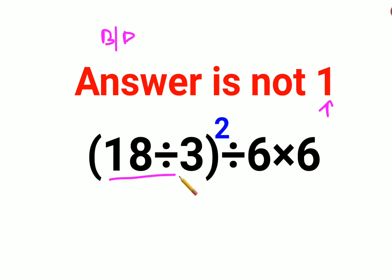So we have 18 divided by 3, that is 6 squared, divided by 6 into 6. Now this is where a lot of people get stuck. They think we should do this: 36, and this becomes divided by 36. 6 into 6 is 36, that is why the answer will be 1. But that is wrong.